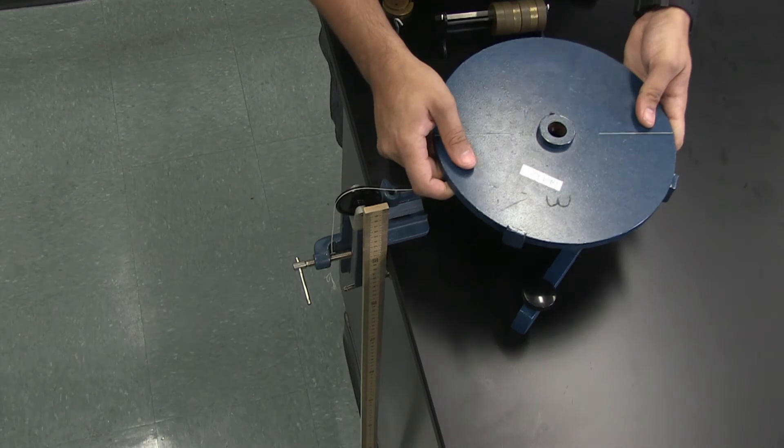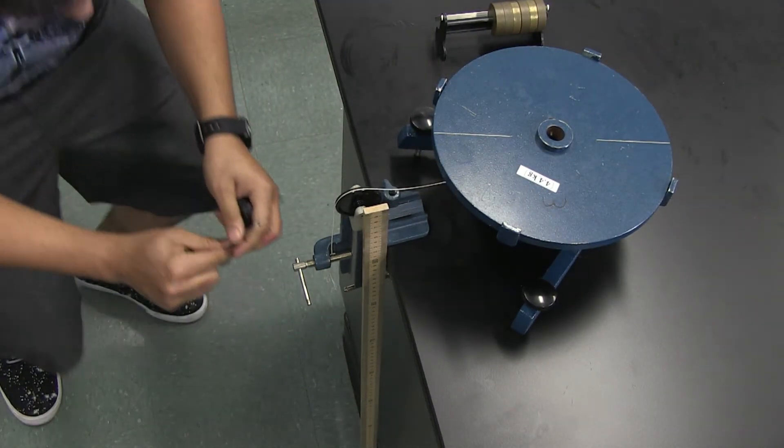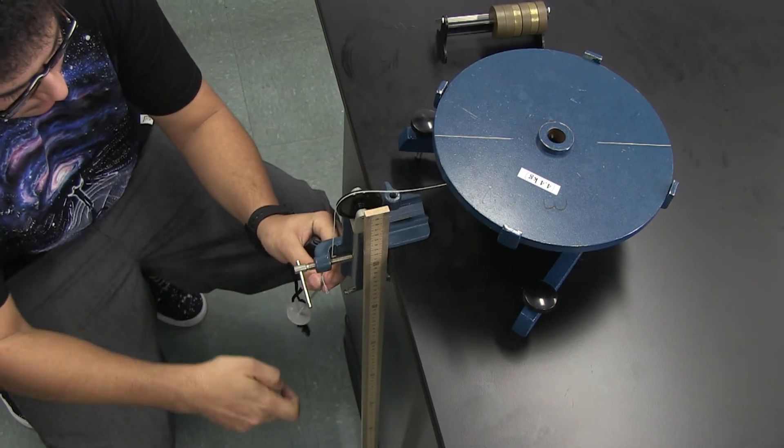Let's find out. In order to find the moment of inertia of the disk, we place it on top of this rotary table, which is connected to this hanging mass by a string. If we let the mass go, the table and the disk start spinning faster and faster.